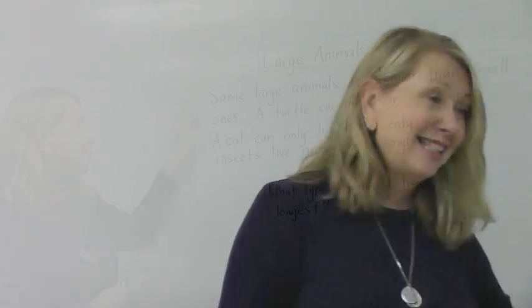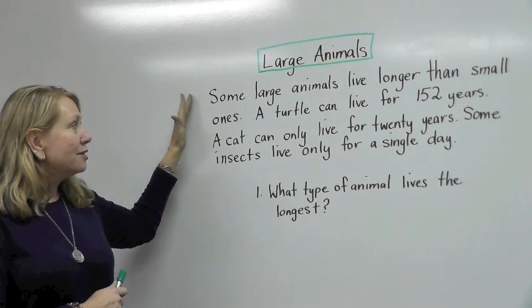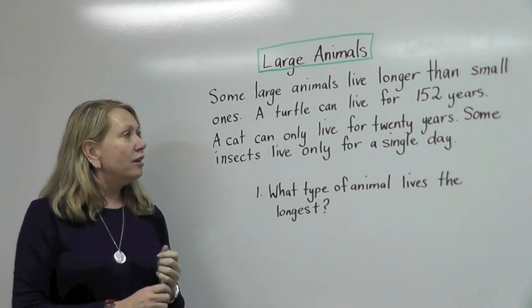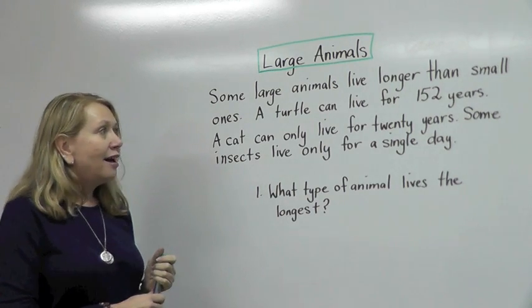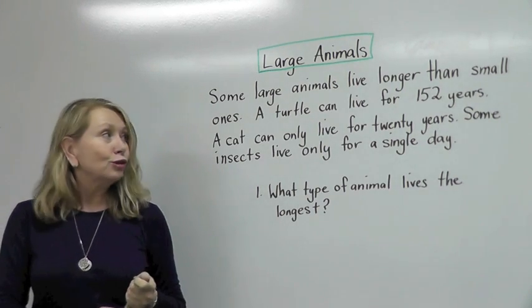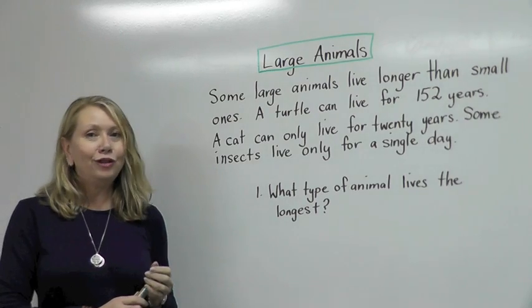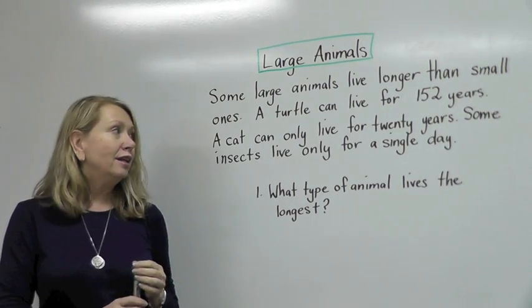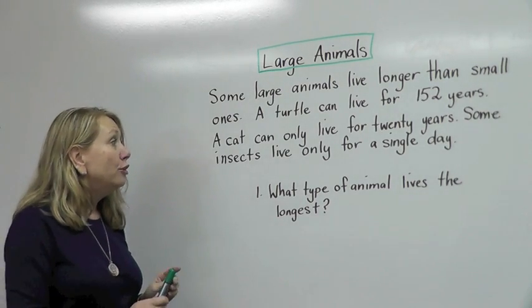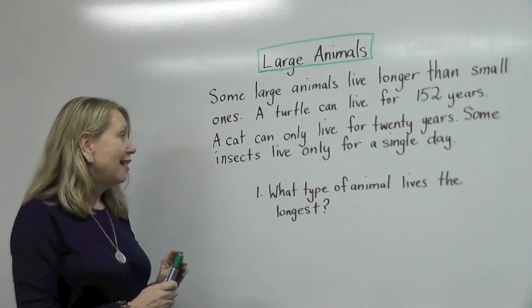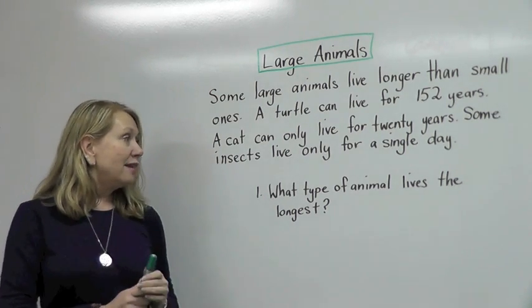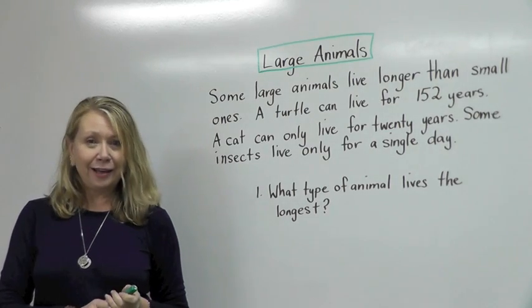So that is the 3 H's, and we're going to illustrate each of these question types with this short passage. 'Large animals.' Some large animals live longer than small ones. A turtle can live for 152 years. A cat can only live for 20 years. Some insects live only for a single day.